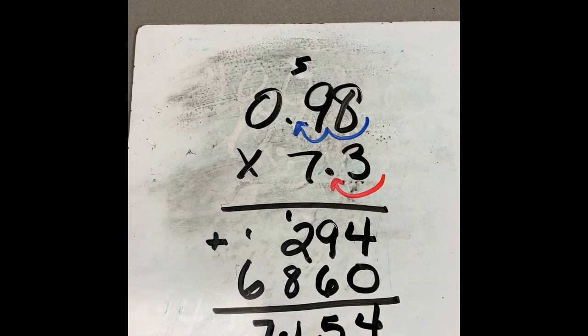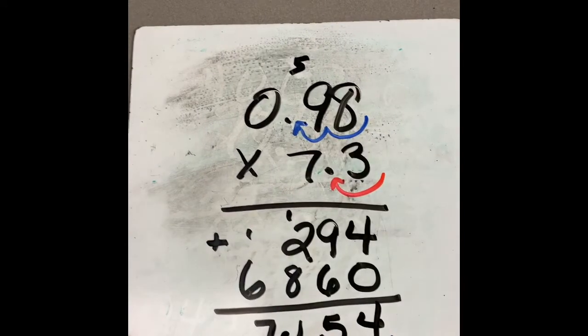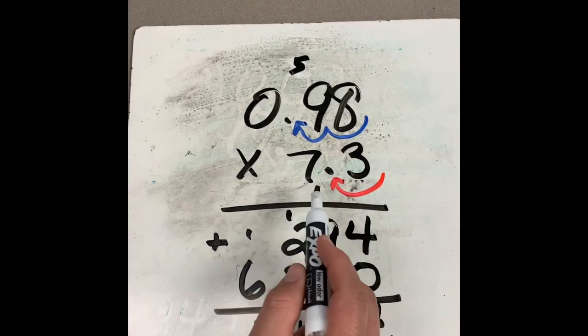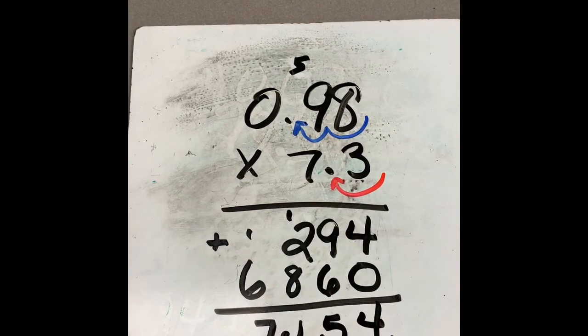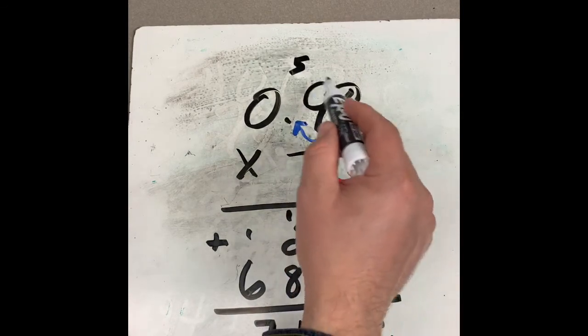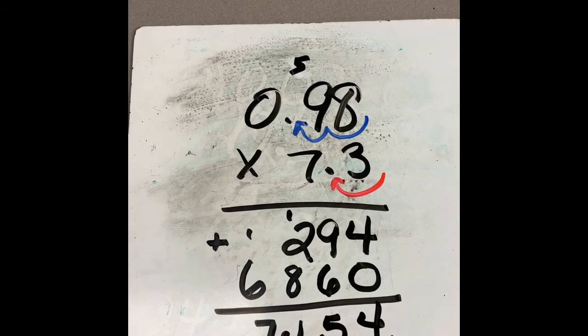Now, this makes sense because this number, if I were to round it, would be about one, and 7.3, or even seven, if you want to round that number, times one, seven times one would be right around seven. This will be a little less than 7.3 because this isn't quite one. So this answer is very reasonable. I think we can say we did all right.